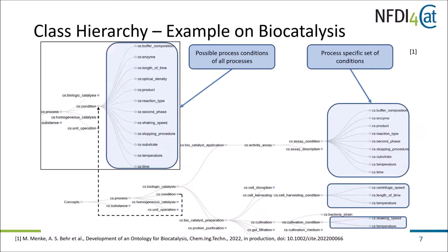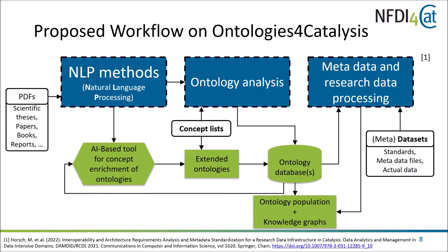We set up first basic small process-related vocabularies. Under the term 'process' we listed some conditions, and within the conditions type we listed all the process conditions we could imagine. When describing processes of biological catalysis, we had things like 'assay condition' where we listed all the process-specific sets of conditions. I want to close the talk here as I was not able to fully show the overall workflow due to time issues.